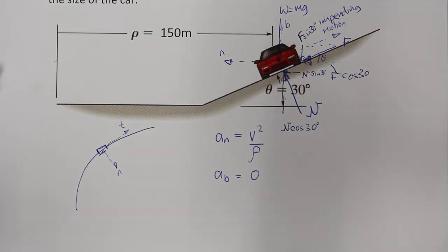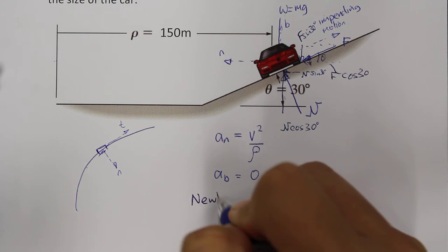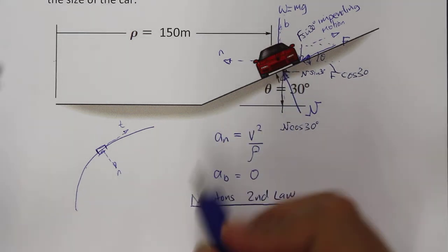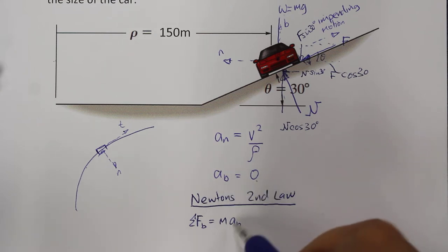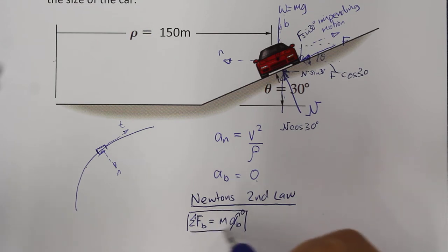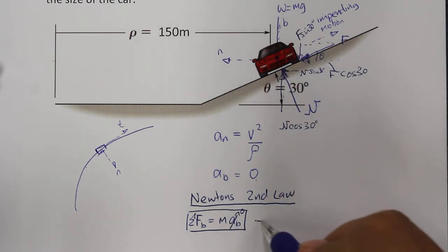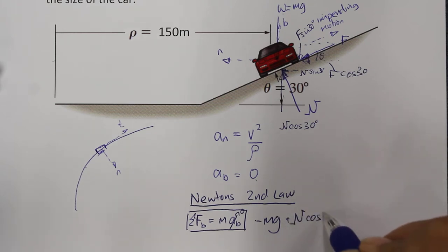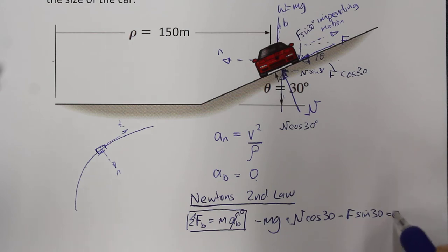From Newton's second law, the sum of forces equals mass times acceleration. In the B direction, the summation of forces equals mass times acceleration in the B direction, which we saw was equal to zero. So we write down: the weight force going down is negative, plus N·cos30° going up, minus F·sin30°, all equal to zero.